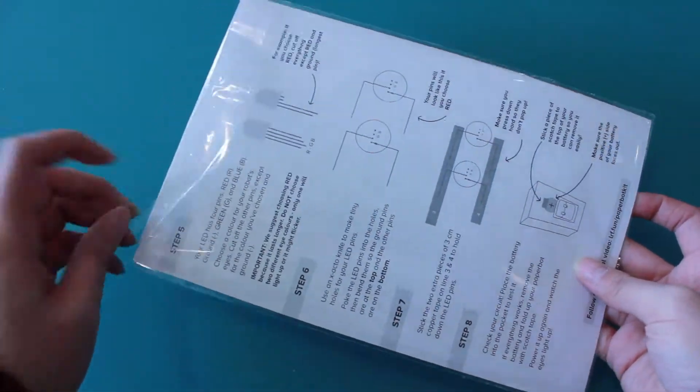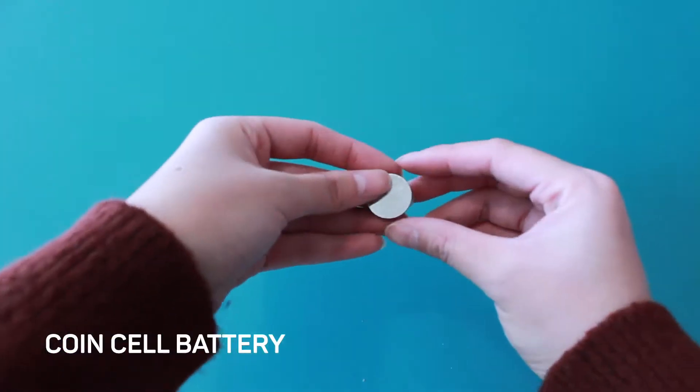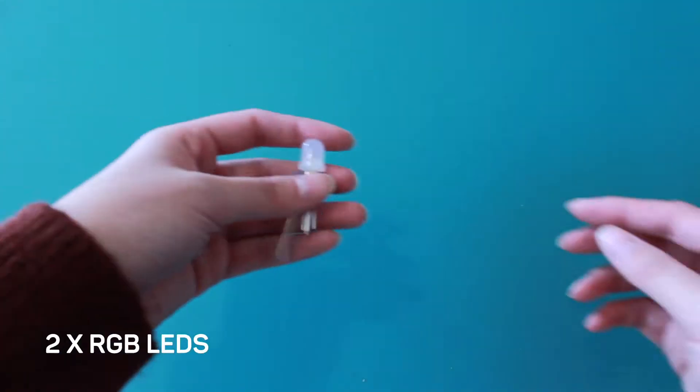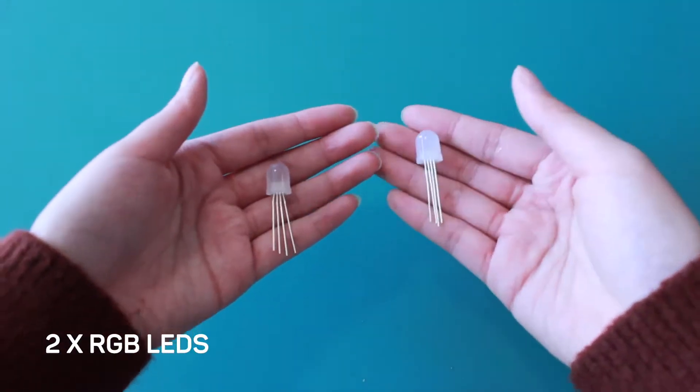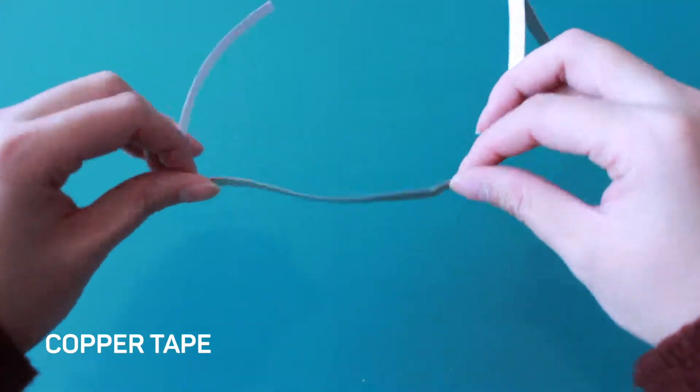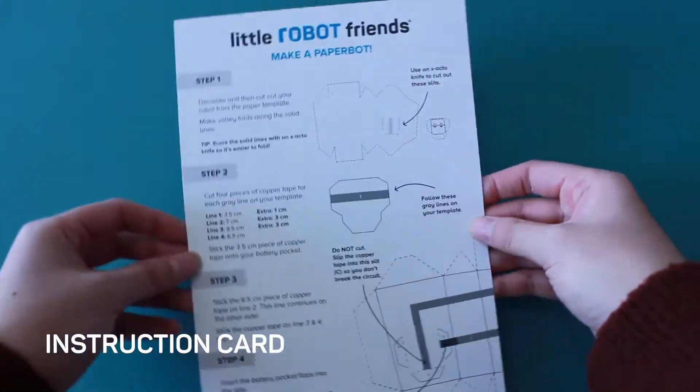First let's take a look at what's in our kit. A robot template, one coin cell battery, two RGB LEDs, copper tape, and an instruction card.